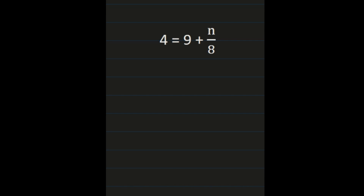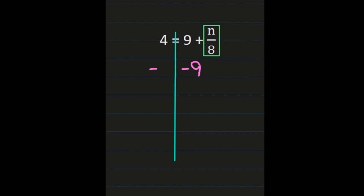For our final example, we have 4 equals 9 plus n over 8. We want to isolate our variable, but for now n over 8 must stay grouped together, so box that first. Add the line down your equals sign to keep the equation balanced. To get n over 8 by itself, we have to deal with the positive 9 — the inverse is to subtract 9 from both sides. On the left, 4 minus 9: adding integers with different signs, subtract 9 minus 4 to get 5, and keep the sign of the larger absolute value — the negative 9 — giving negative 5. On the right, 9 minus 9 is 0, plus n over 8.